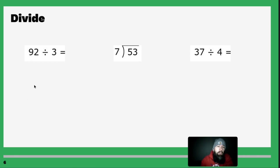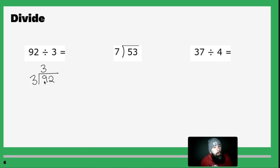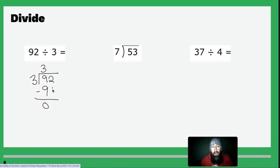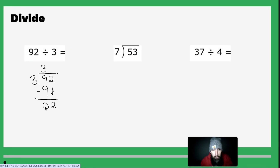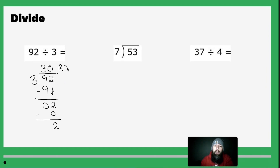Let's do 92 divided by 3. We start the process: 3 goes into 9 three times. Three times 3 is 9. Subtract: 9 minus 9 is 0. Drop down the 2. Three goes into 2 no times, so if 3 can't go into that number we write 0. Zero times 3 is 0. Subtract: 2 minus 0 is 2. We're out of numbers, which means remainder 2. So this becomes 30 remainder 2.